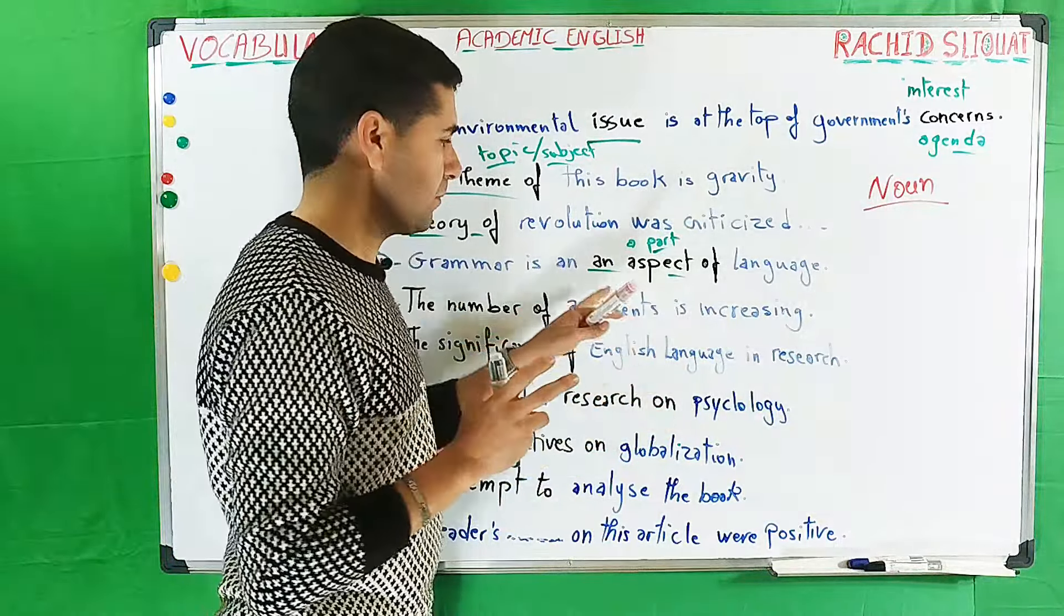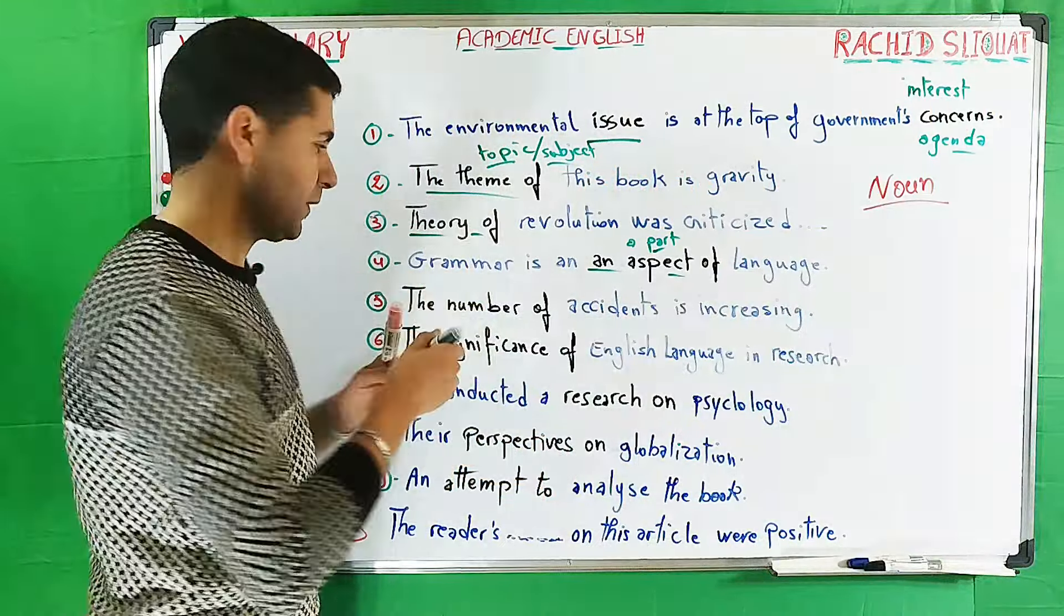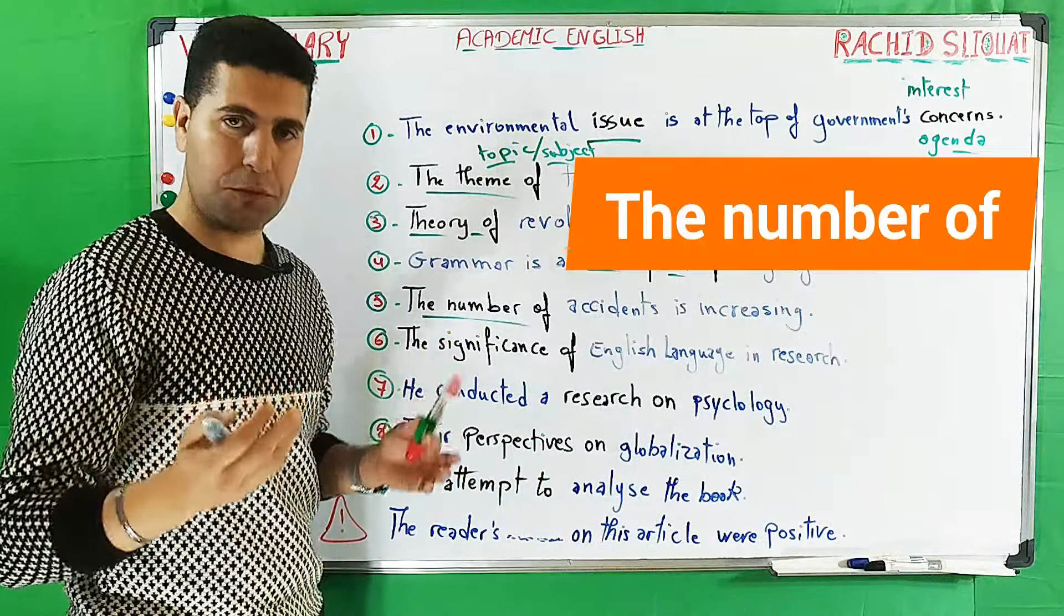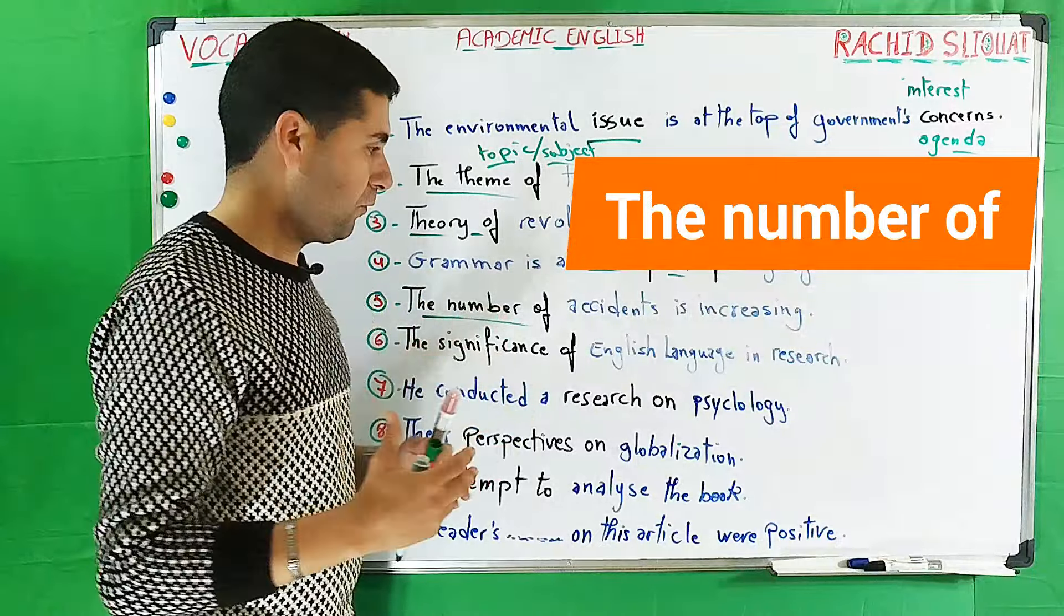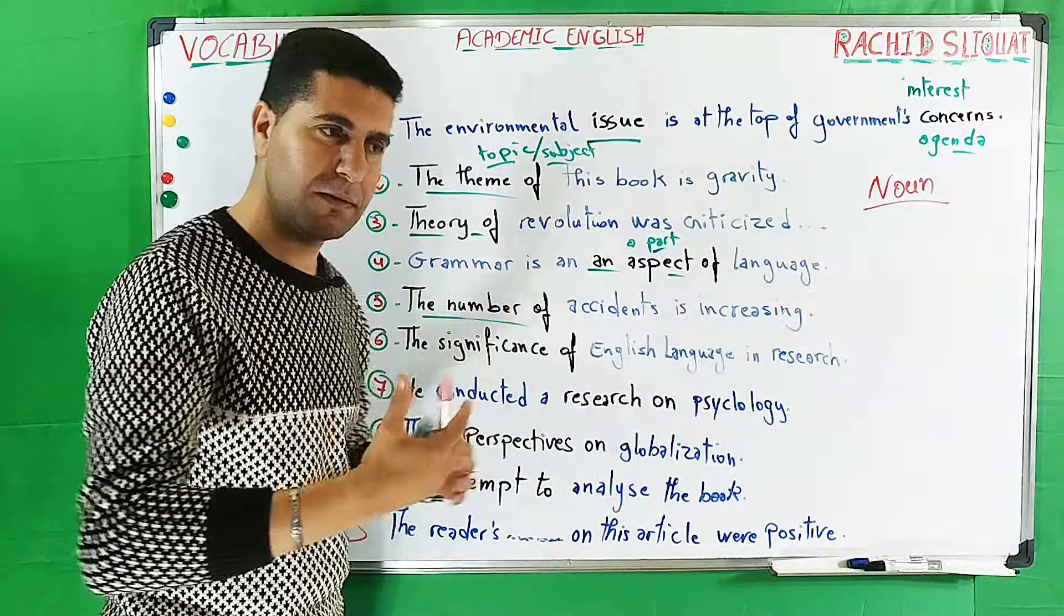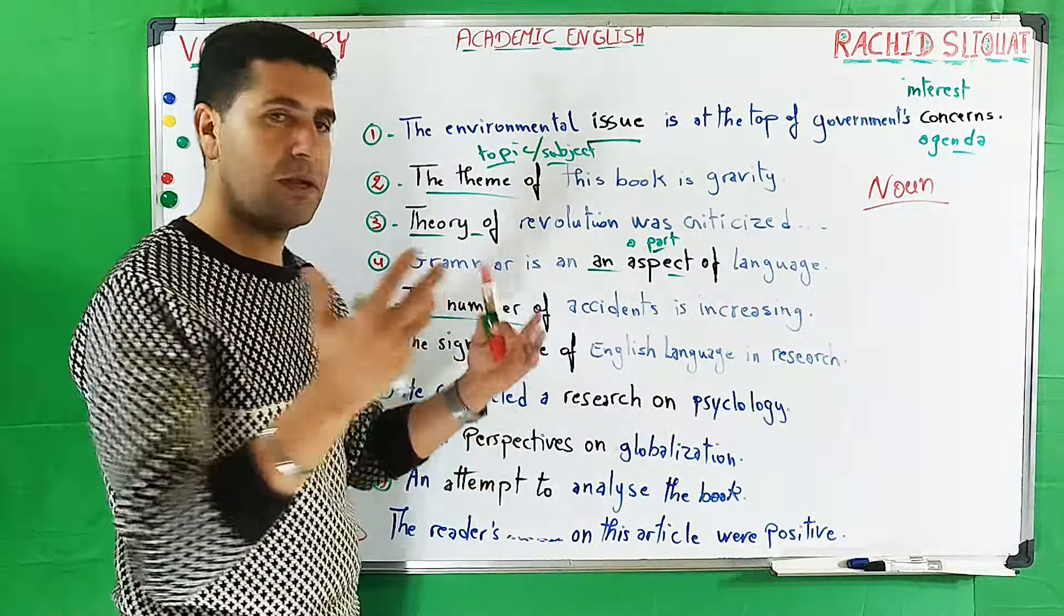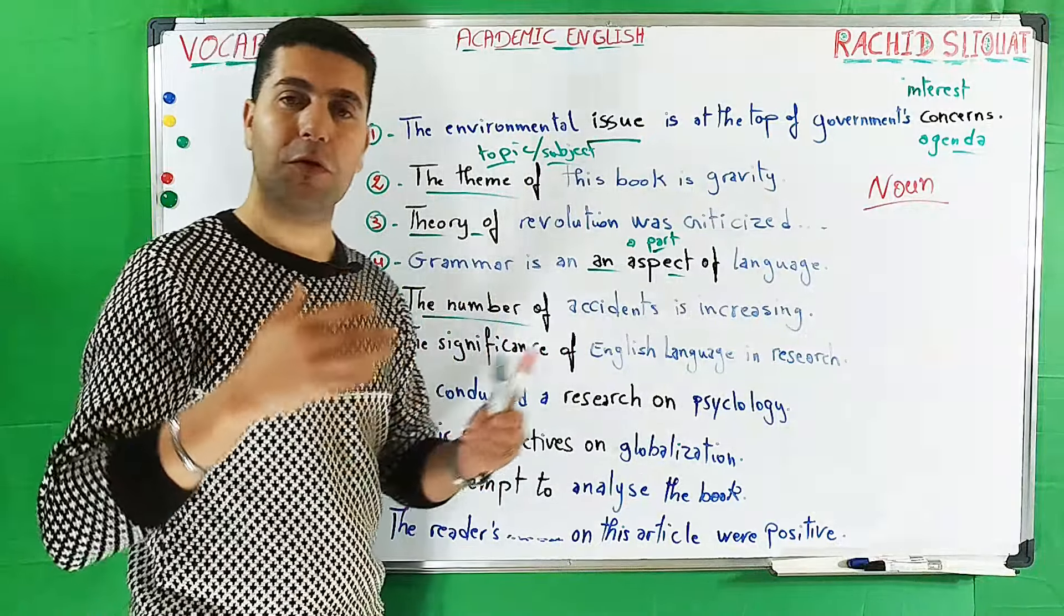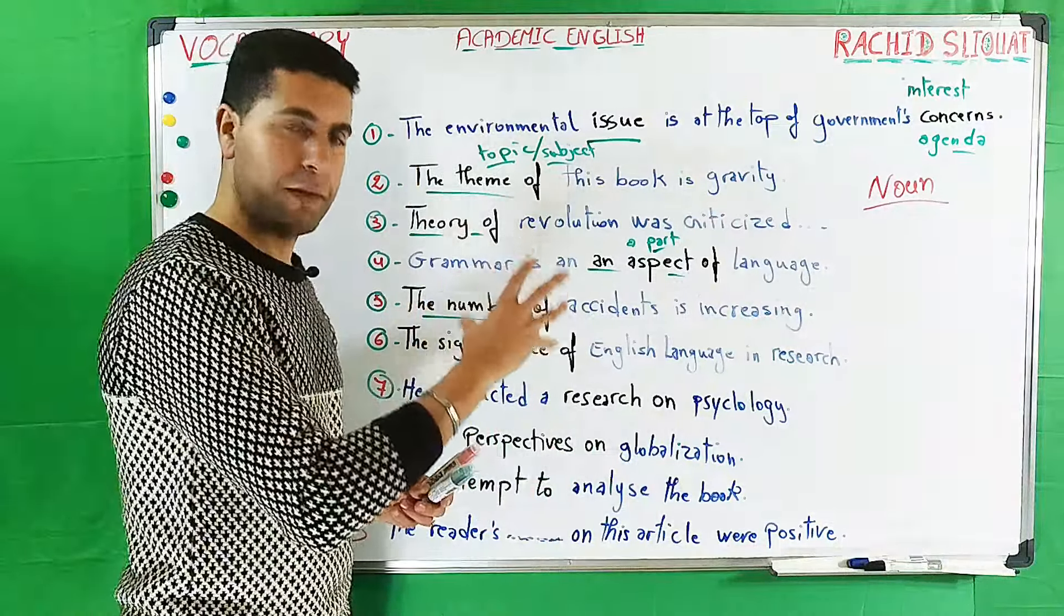Number five: 'The number of accidents is increasing.' These expressions are important. The number of crimes is increasing, the number of students is increasing at high schools or universities, the number of job opportunities is increasing. So the number of something that we can count.